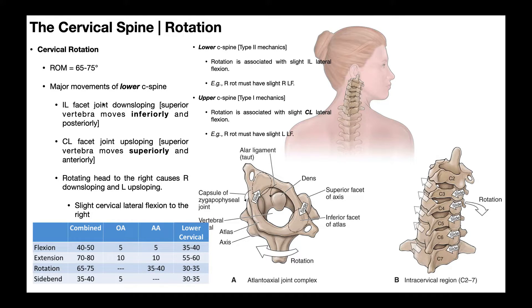Considering the ipsilateral facet joints first — with right rotation, the right side down-slopes. This means the superior vertebra moves inferiorly and posteriorly on the vertebra below; at the C3-C4 segment on the right, C3 glides inferiorly and posteriorly relative to C4. Because of this down-sloping, the facet joints close into their closed-packed position and the intervertebral foramina narrow. So if a person has right-side radiculopathy, they won't want to rotate their neck to the right, as it narrows the foramina and further compresses the nerve root.